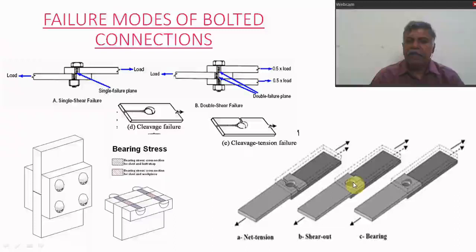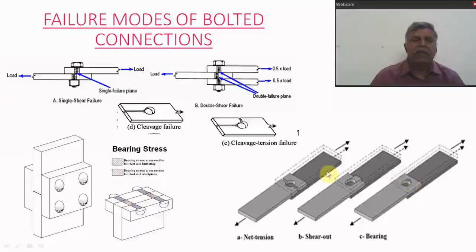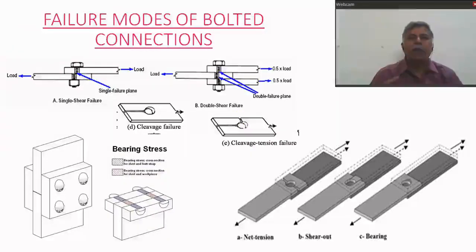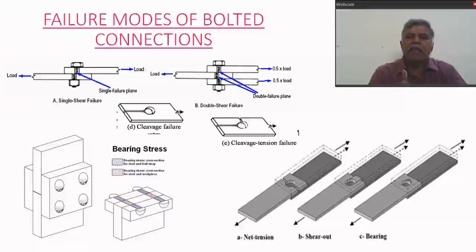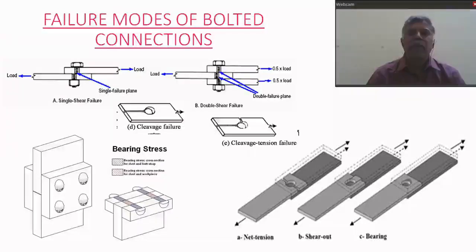The next mode is shear out failure — if proper edge distance is not provided, the edge of the plate will shear out. In some cases, tearing failure of the plate occurs, and bearing failure of the plate can also occur. In some cases, cleavage failure will occur, and in some cases combined cleavage and tension failure occurs. To find the strength of one bolt, we calculate the load required for each failure mode: shear failure of the bolt, bearing failure of the bolt, bearing failure of the plate, shear out failure, tearing failure, and cleavage failure. Whichever load is the lowest among all these modes is the strength of the bolt, and total load divided by that strength gives the number of bolts.